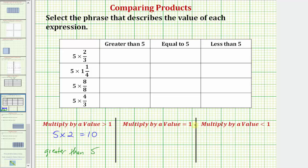Next, if we multiply five by a value of one, well, five times one, of course, is five. So if we multiply five by a value equal to one, the product will equal five.